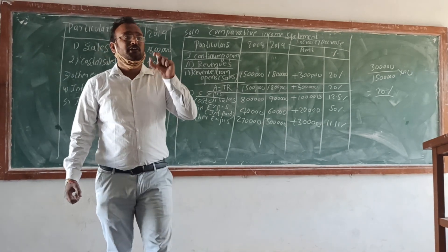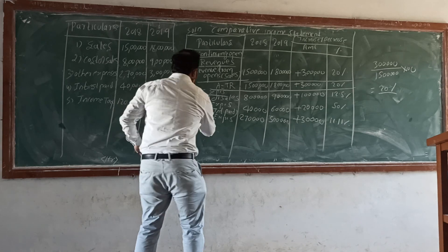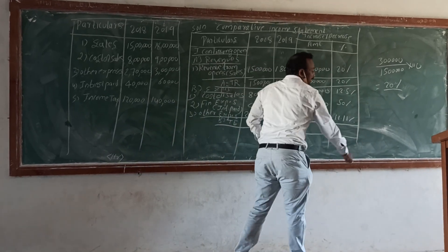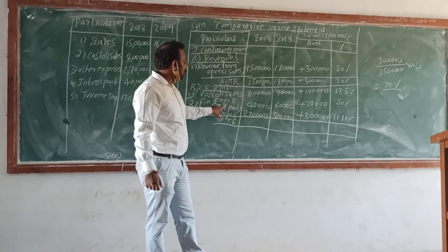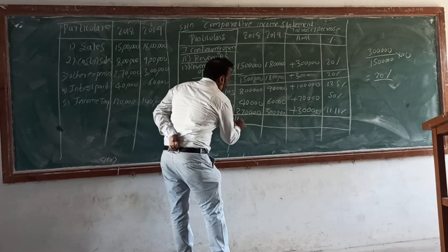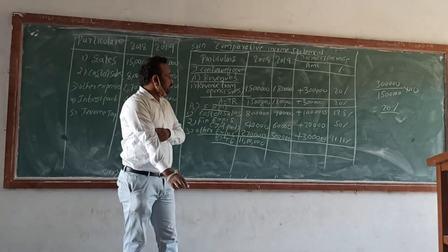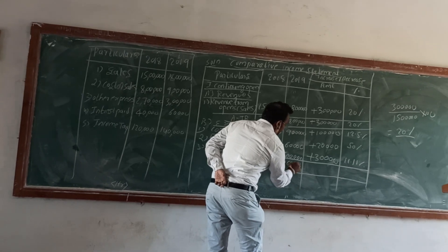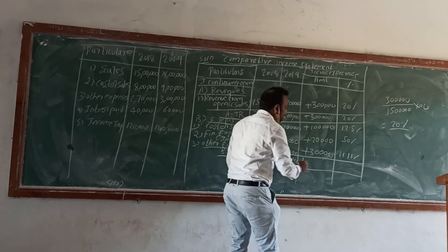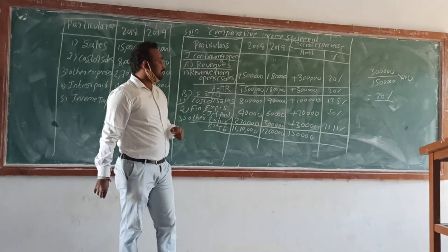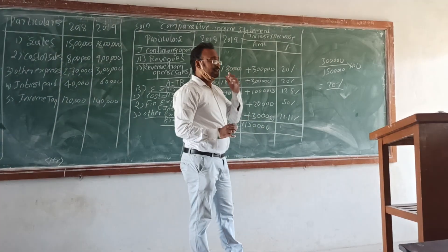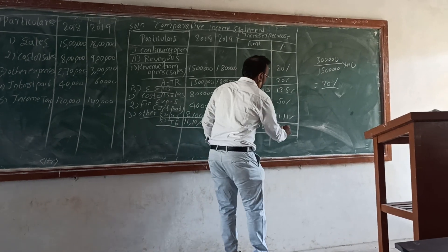Total expenses (Part B) include cost of sales, finance expenses, and other expenses. Total expenses for the first year are 11,10,000 and for the second year are 12,60,000. The increase is 1,50,000.